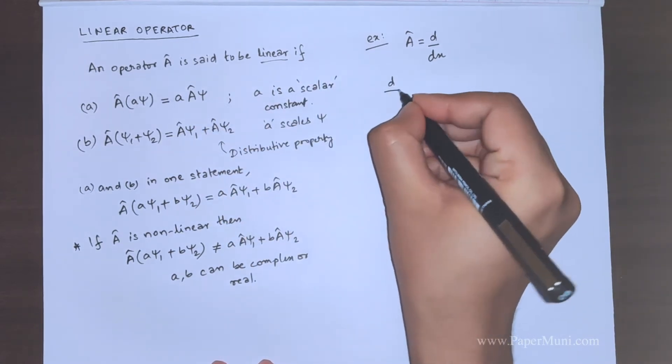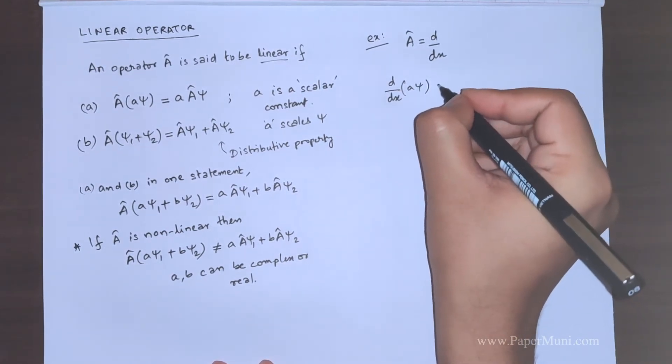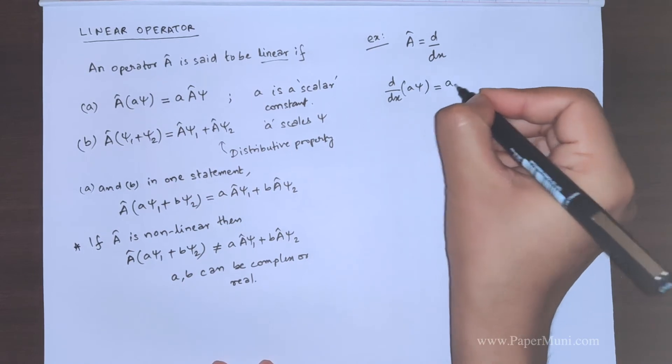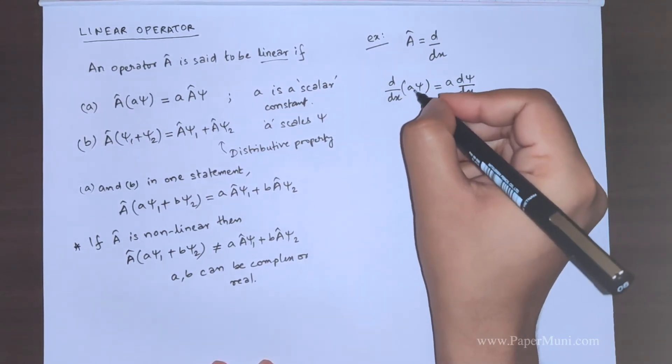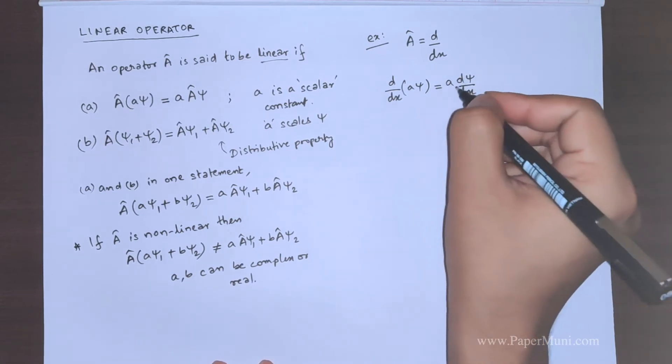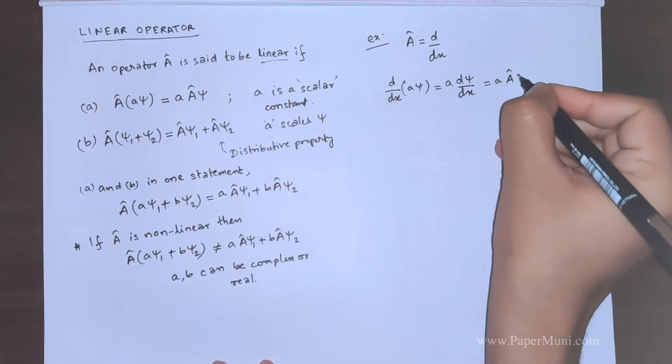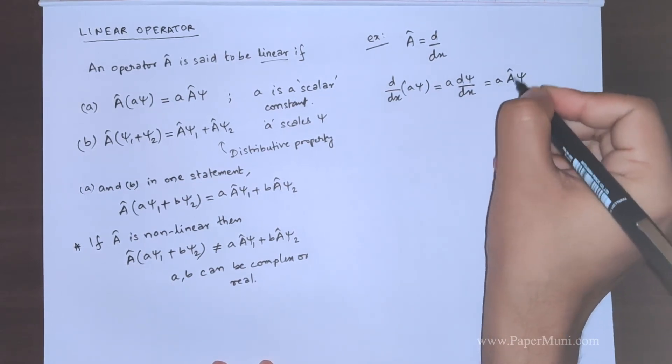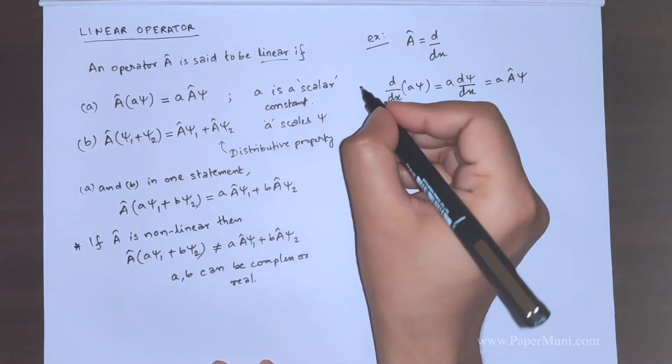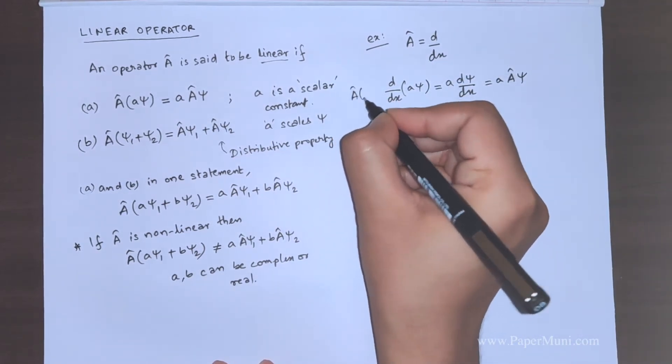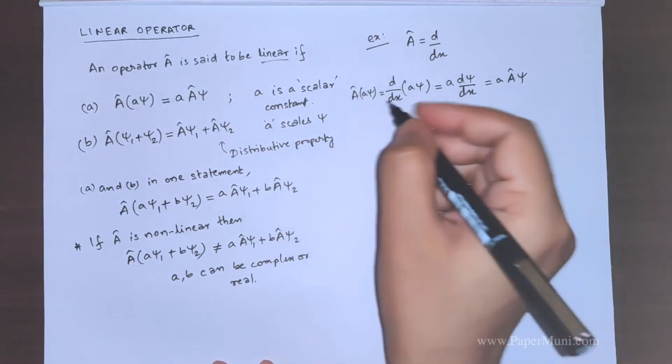If we have d dx, this is A psi equal to A d psi. We know that the derivative does not operate on the constant. It will come out and it will look like this and it is basically equal to saying that A times operator operating on the wave function. This was actually A psi.